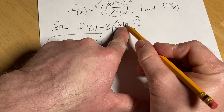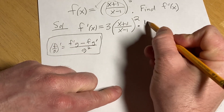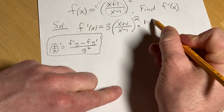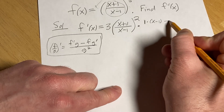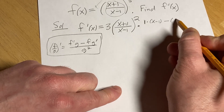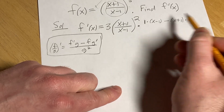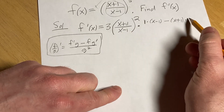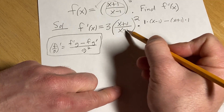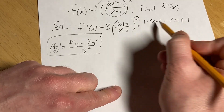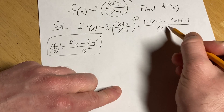So it's the derivative of the top, which is just 1, times the bottom, which is x minus 1, minus the top, which is x plus 1, times the derivative of the bottom, which is 1 — because the derivative of x is 1 and the derivative of negative 1 is 0 — all over the bottom squared.